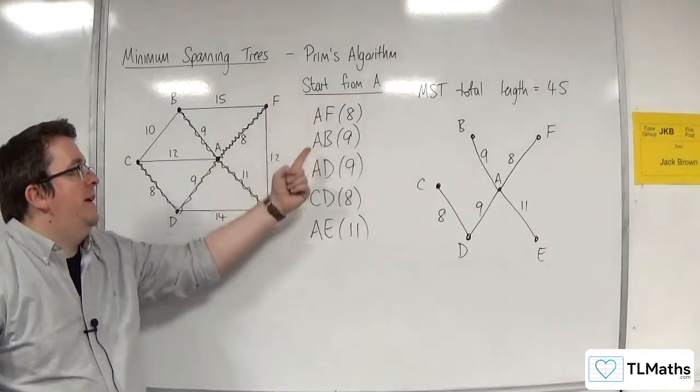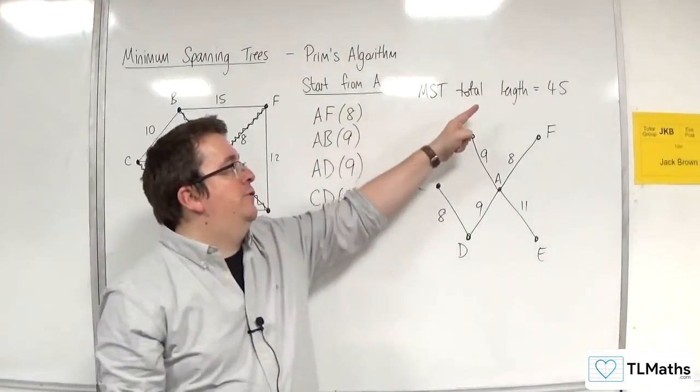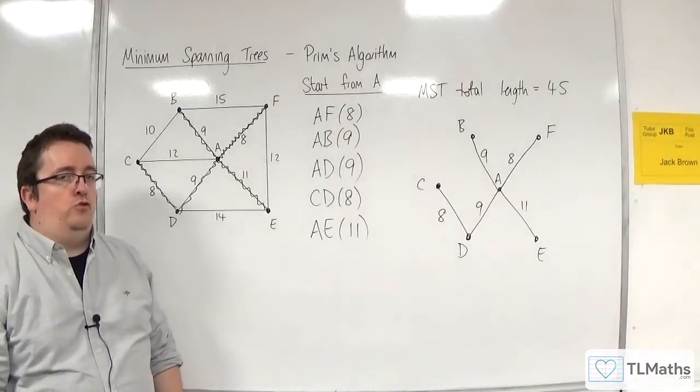So this is the list of edges in the order that they were chosen using Prim's algorithm. Here is the total length. Here is the tree as drawn.